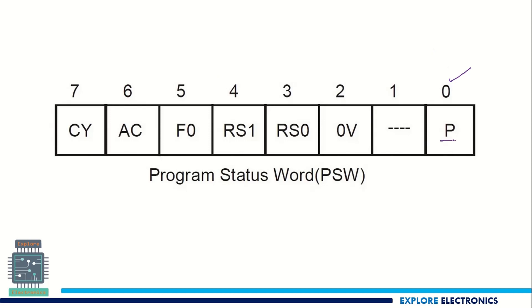The 0th bit will be representing P, that is parity. The first pin will be not representing any flag. The second bit will be representing overflow. The third bit and the fourth bit will be representing the bank select.